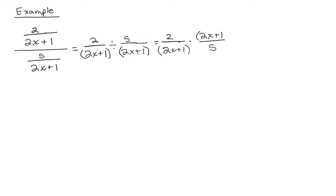So we have 2X plus 1 in the numerator over 5. I'm going to write these binomials as 2X plus 1. And now you can cancel those. Those are common factors. So the answer to this problem is simply 2 over 5.